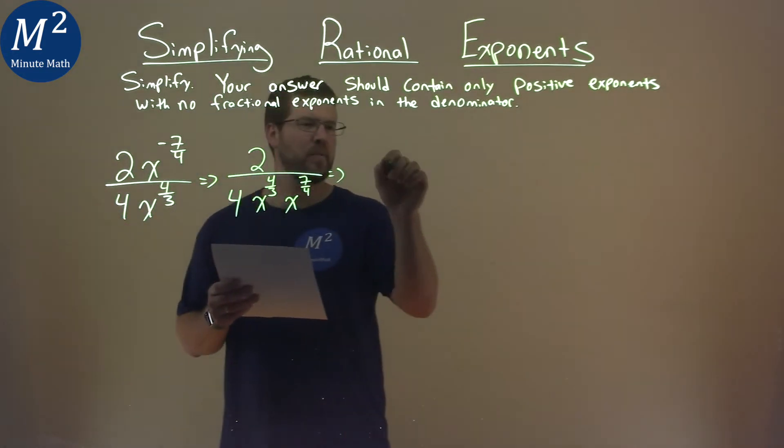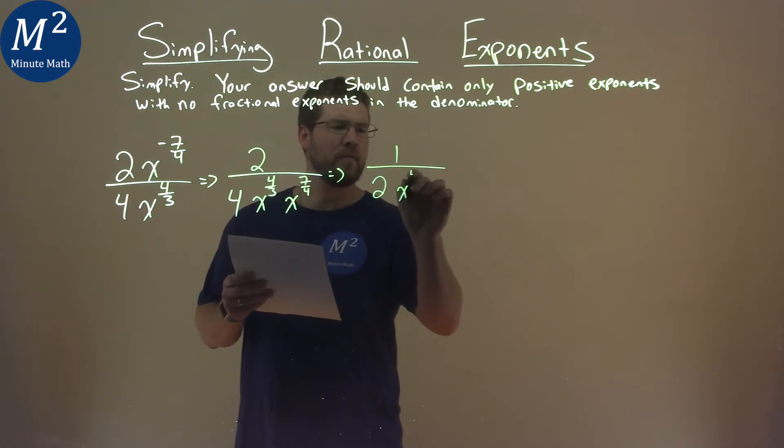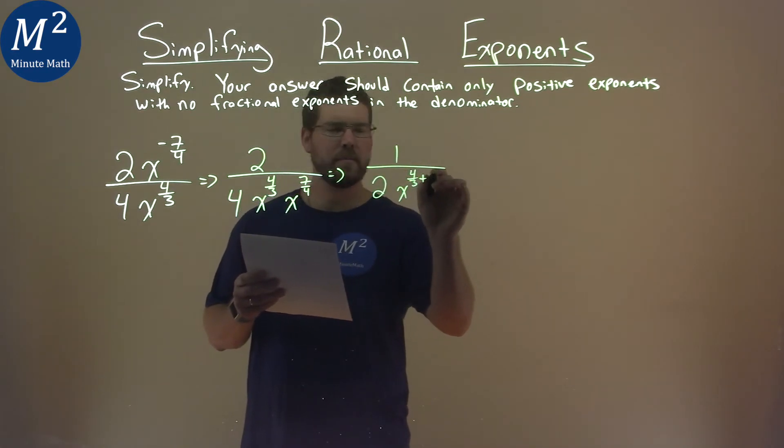2 and 4 is just the same as 1 half, so I put that here, and we have x to the 4 thirds plus 7 fourths.